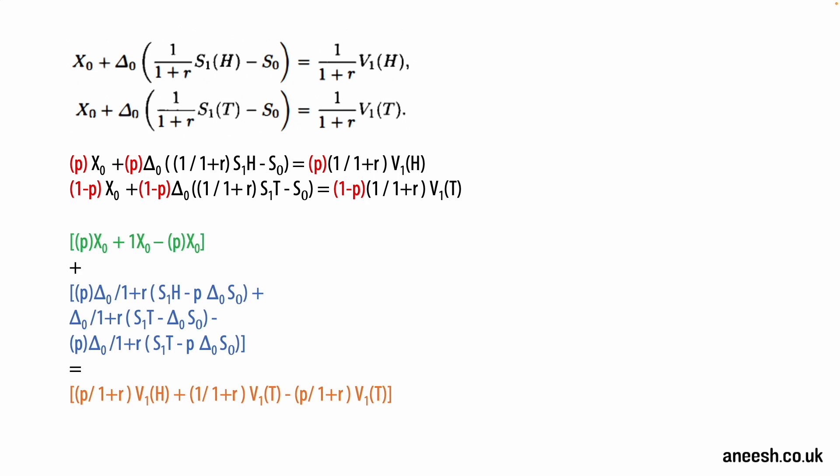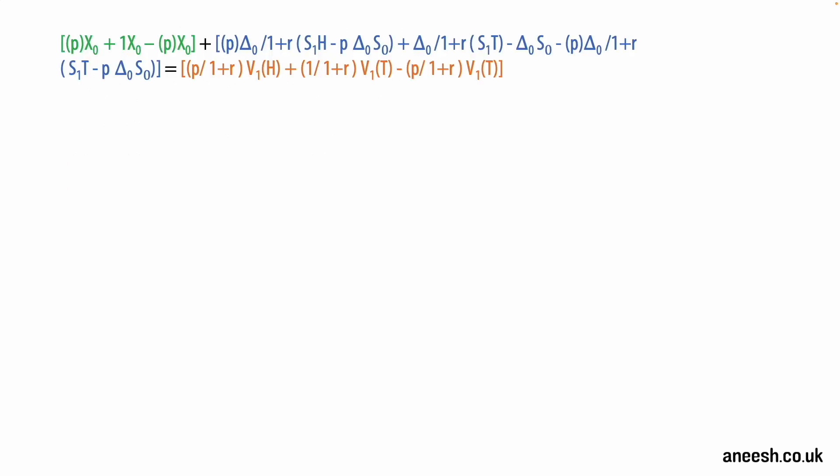So after applying p and (1-p) to our formula, we can now begin to add them together. So first I will add the X0 components together in green, so we have p·X0 plus X0 minus p·X0. Then I will add the middle components together in blue for our S1(H) and S1(T) formula. And lastly for the equality on the right hand side with reference to V1(H) and V1(T) in orange.